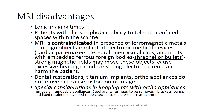MRI is contraindicated in the presence of ferromagnetic metals — for example, implanted electronic medical devices like cardiac pacemakers, cerebral aneurysmal clips, and patients with embedded ferrous foreign bodies like shrapnel or bullets. The strong magnetic fields created in an MRI may move these objects, cause excessive heating, or induce strong electric currents which can harm the patient. A pacemaker or aneurysmal clip that moves due to the magnetic field can obviously cause harm rather than benefit.